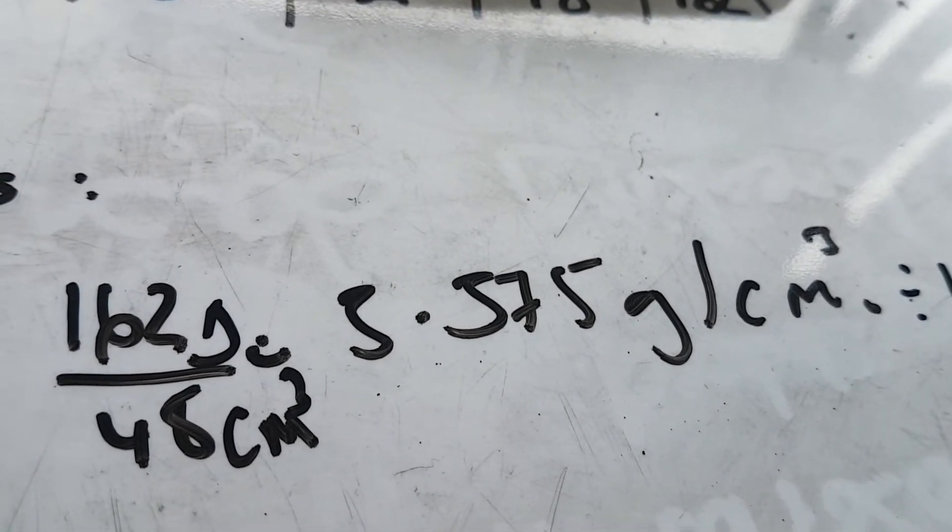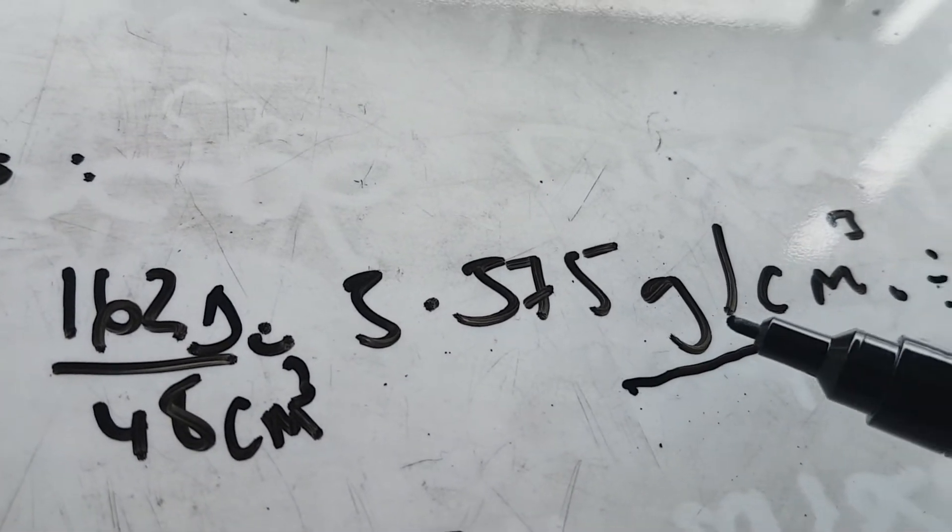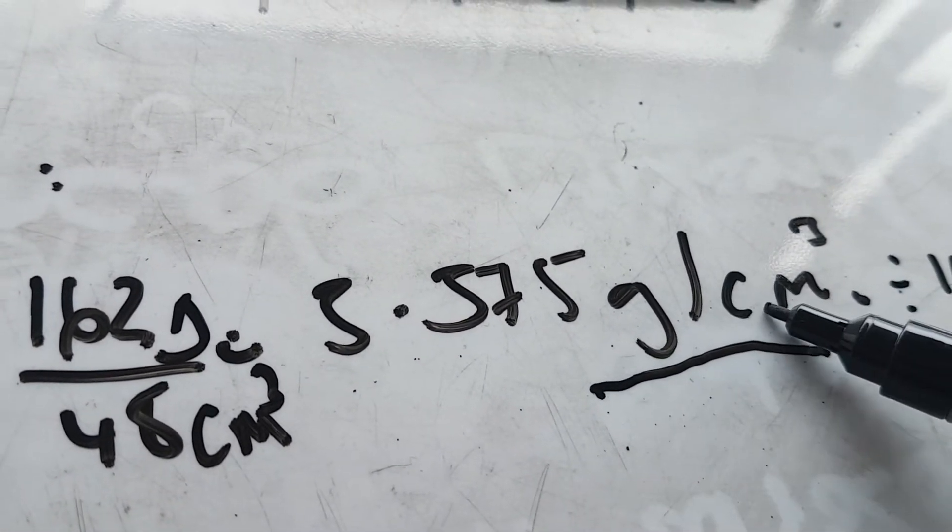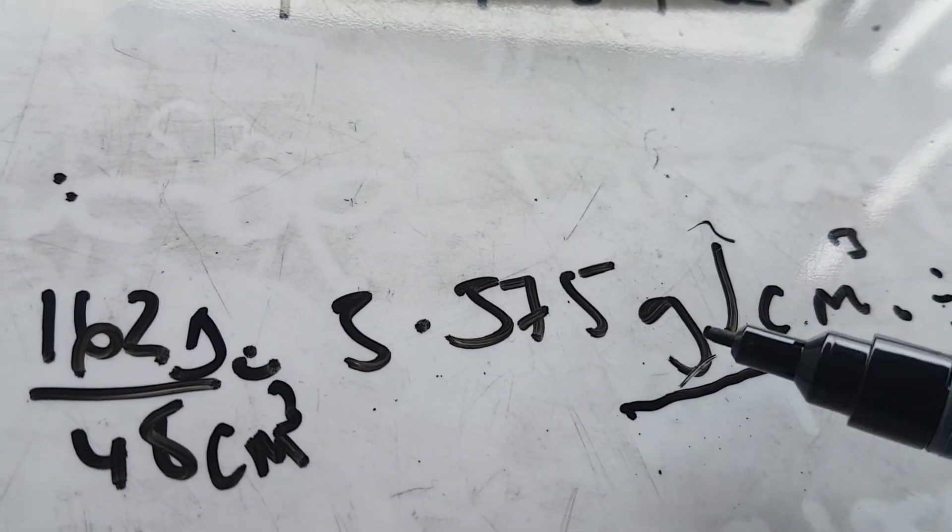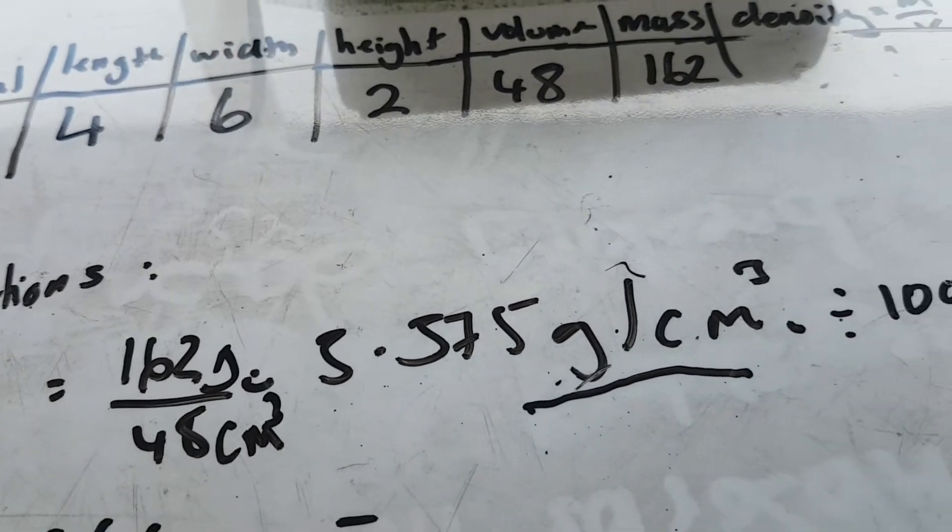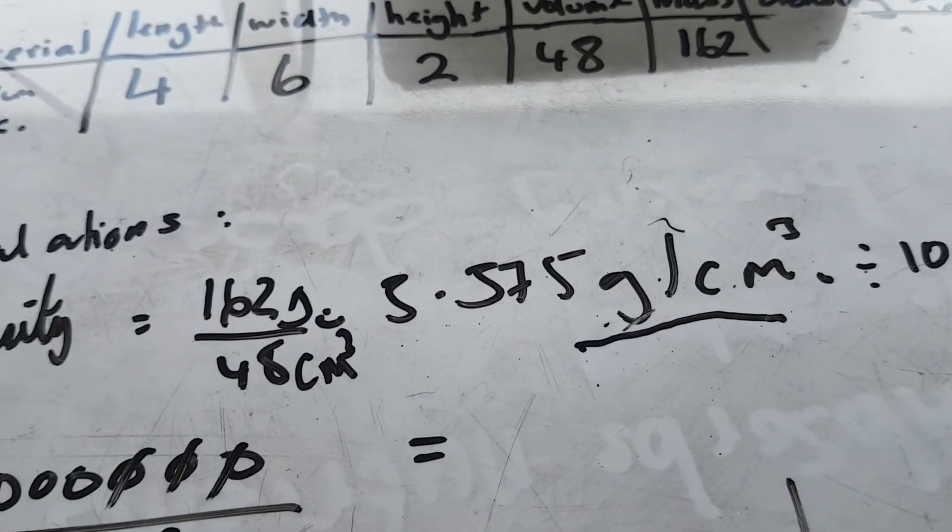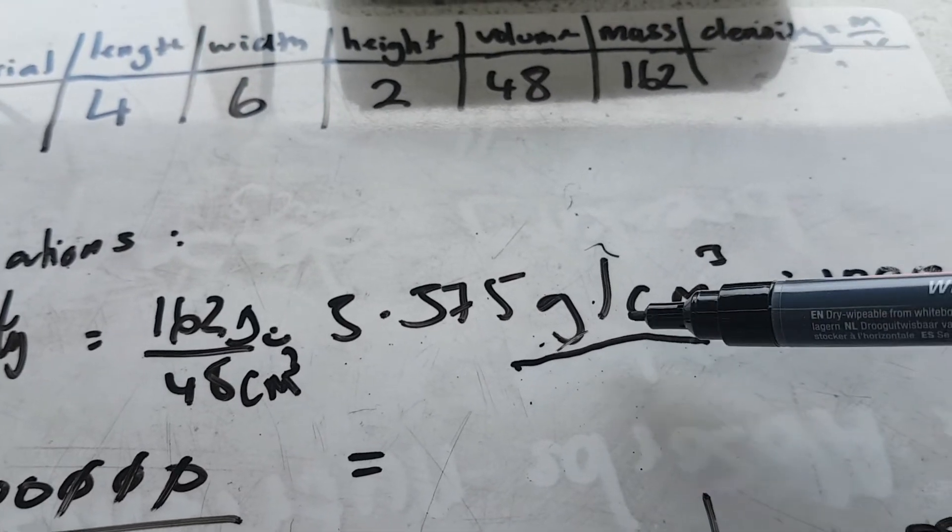However, we do not want the end answer in grams per centimeter cubed. We want it in kilograms per meter cubed. And to change this into kilograms per meter cubed, we need to divide this answer by a thousand. So once you do that, you'll have your answer in kilograms per meter cubed.